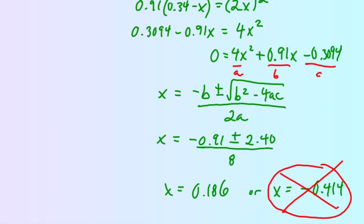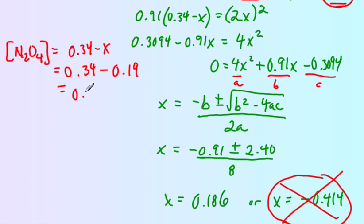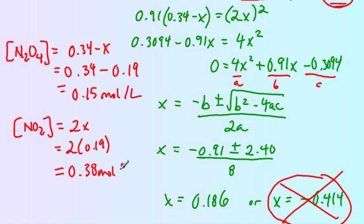From that x value we can calculate the concentrations of the reactant and product at equilibrium. The concentration of N2O4 was 0.34 minus x, so that's 0.34 minus 0.19, which equals 0.15 moles per liter. Our concentration of NO2 equals 2x or 2 times 0.19, which gives 0.38 moles per liter.